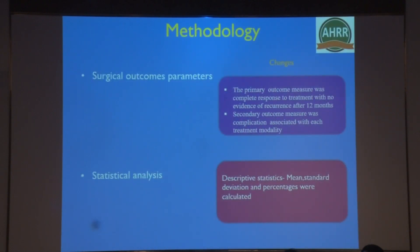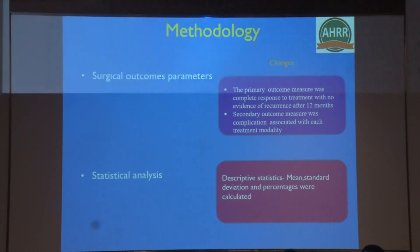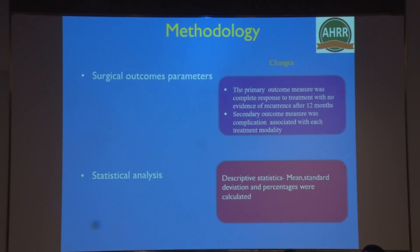The primary outcome measure was complete response to treatment with no evidence of recurrence after 12 months. The secondary outcome measure was complications associated with each treatment modality.